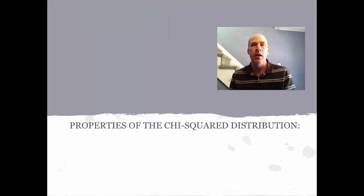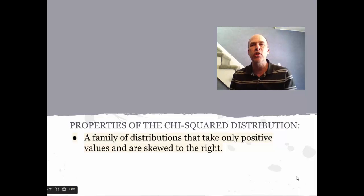Next, let's look at the properties of the chi-squared distribution. Since we're doing a summation of things that are being squared, we can never get a negative value for the chi-squared statistic. First, the chi-squared distribution is a family of distributions that only take positive values and are skewed to the right. The lowest we can have is zero, which occurs if the expected and the observed happen to match up.